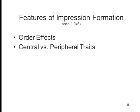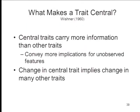Sticking with Asch, we have two big findings. First, there are order effects in impression formation — early information changes the impression more than later information. And most importantly, there is the distinction between central and peripheral traits: some traits make a big difference to an impression, other traits don't make much of a difference at all. The real question is: what makes a trait central?